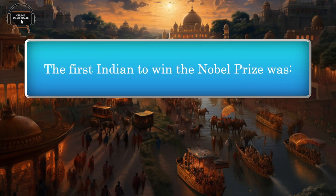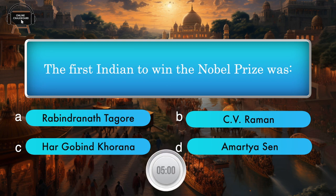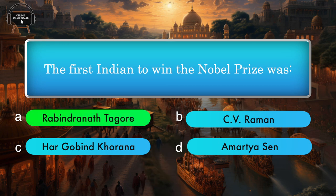The first Indian to win the Nobel Prize was — Rabindranath Tagore, C.V. Raman, Har Gobind Khorana, Amartya Sen. Answer: Rabindranath Tagore.